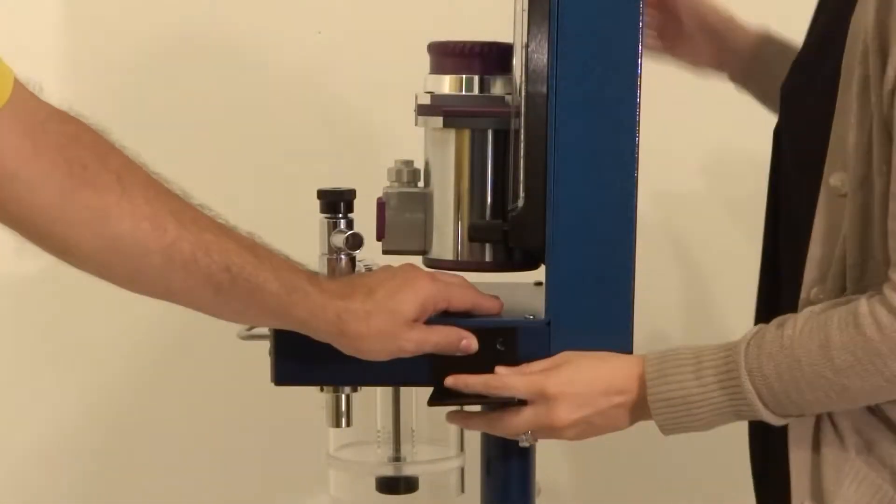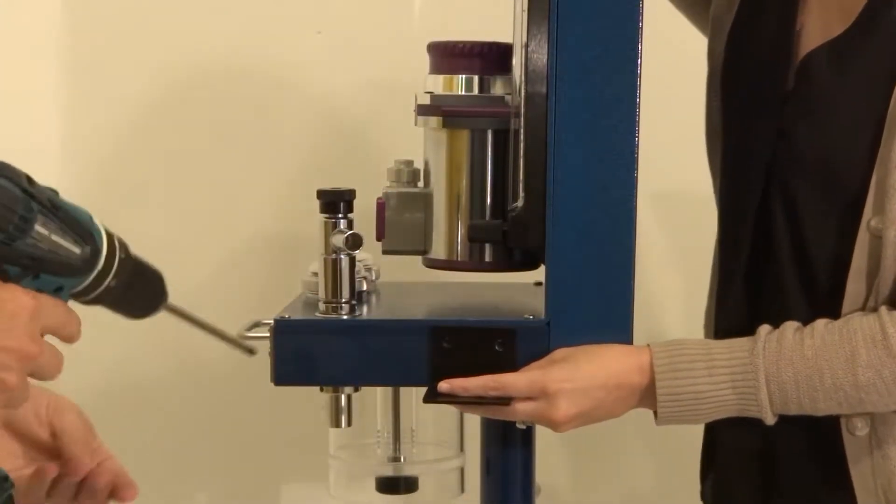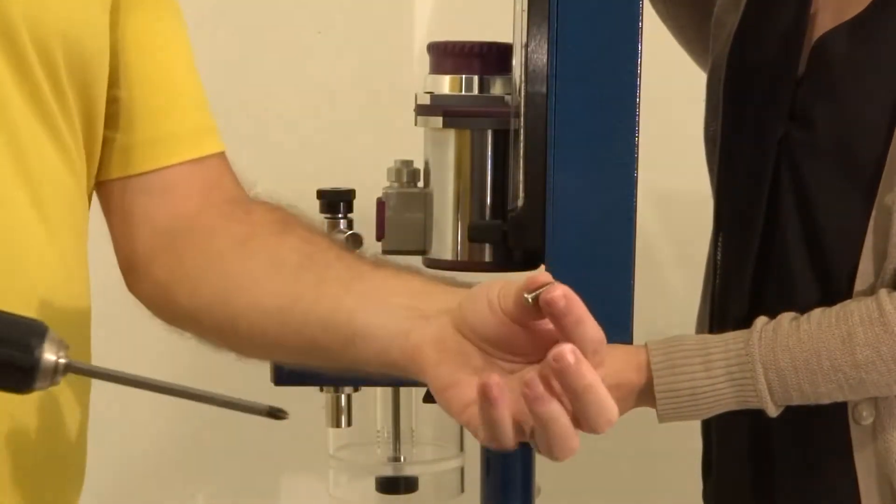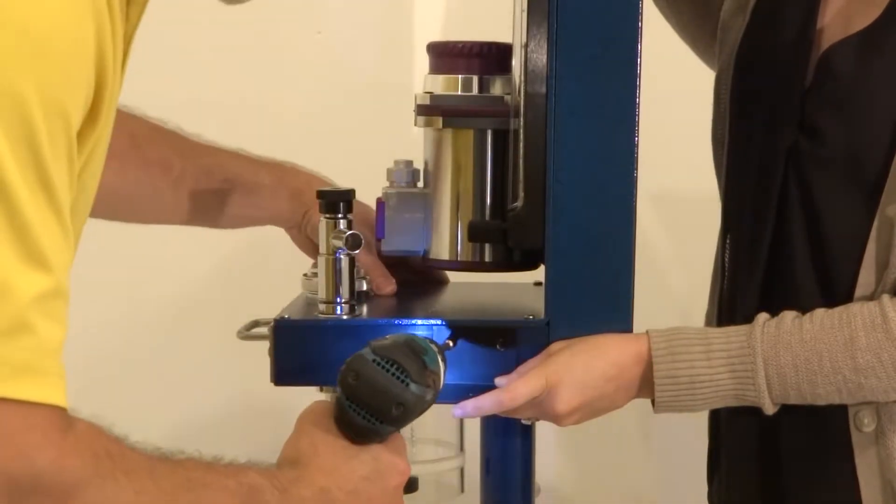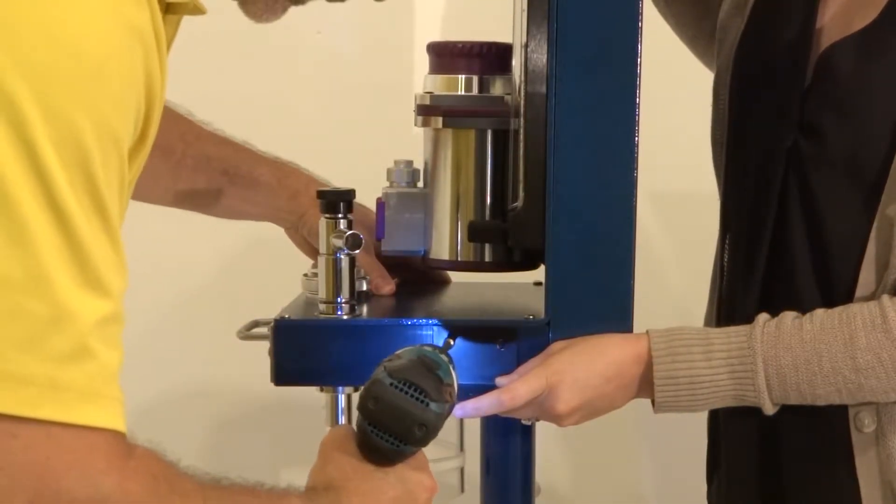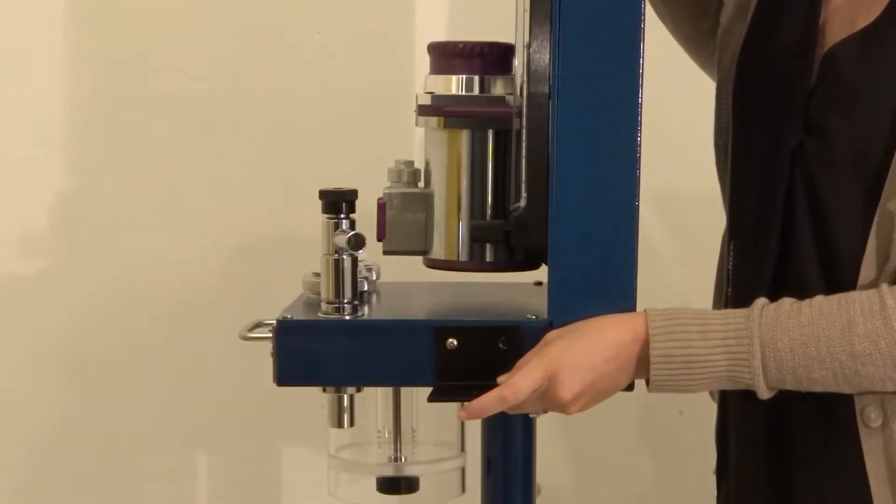If you require assistance, have a second person hold the bracket in place. Use a battery powered drill to drill the two supplied screws through the holes in the bracket, securing it to the machine panel.